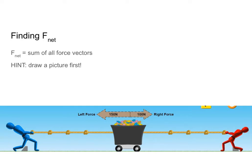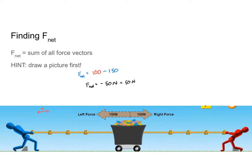I need to decide which direction is positive. I'm going to say that to the right is the positive direction. So to find F net, I want to add my positive forces and subtract my negative forces. F net is equal to the force of the red man pulling to the right — 100 newtons, which is positive because it's in our positive direction — minus the force applied by the blue man, which is 150 newtons to the left. So my net force is going to be negative 50 newtons, or 50 newtons to the left. I did that by adding my forces as vectors instead of scalars.